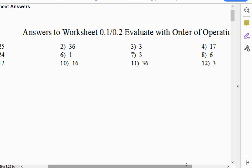When I'm walking around checking homework, I'm just going to be grading based on completion. So, here are the answers for yesterday's assignment. I'm going to check this and today's assignment tomorrow when I'm back. So, have your assignment out. Here are the answers. The first one was 25, the second one was 36, 3 is 3, 4 is 17, 5 is 24, 6 is 1, 7 is 3, 8 is 6, 9 is 12, 10 is 16, 11 is 36, and 12 is 3.